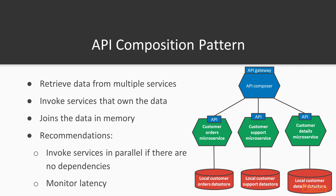One recommendation is that when you invoke the services, it's better if the API composer calls are done in parallel where possible. This will make it much more efficient, especially as there are no dependencies among the calls themselves, so they can be done in parallel rather than sequentially. Another recommendation is to monitor the latency, as composition might be too slow and impact client performance.